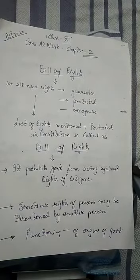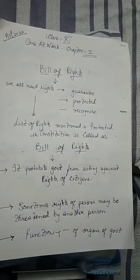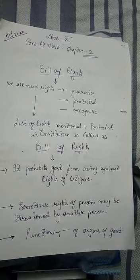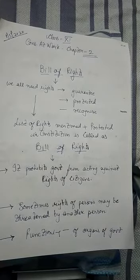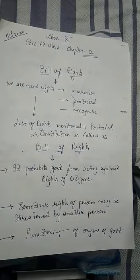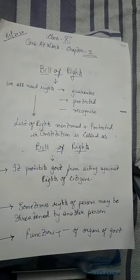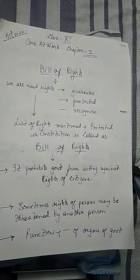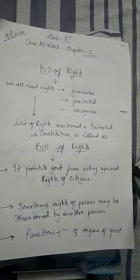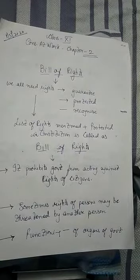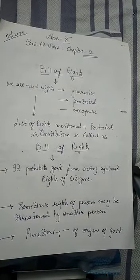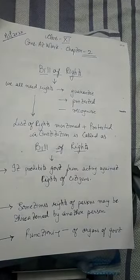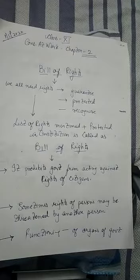To understand the Bill of Rights, first it is important to know that we all need rights. Hum sab logon ko adhikar ki zaroorat hoti hai. Aur yeh rights ko guarantee karna ki they should be provided to all. Number two, isko protect karna so that they can't be taken by any citizen, organization, or institution. Thirdly, recognize karna ki whether a citizen is exercising his right in the welfare of the masses or not - bahut zyada zaroori hai.